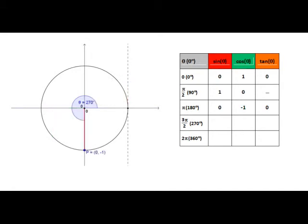Continuing our way around the circle, we can see that tan is going to be undefined at this point since the radius cannot be extended to meet the tangent. But sine, or the y coordinate of the point on the unit circle at this point, is negative 1. And cos at 270 degrees or 3 pi on 2 radians is 0.